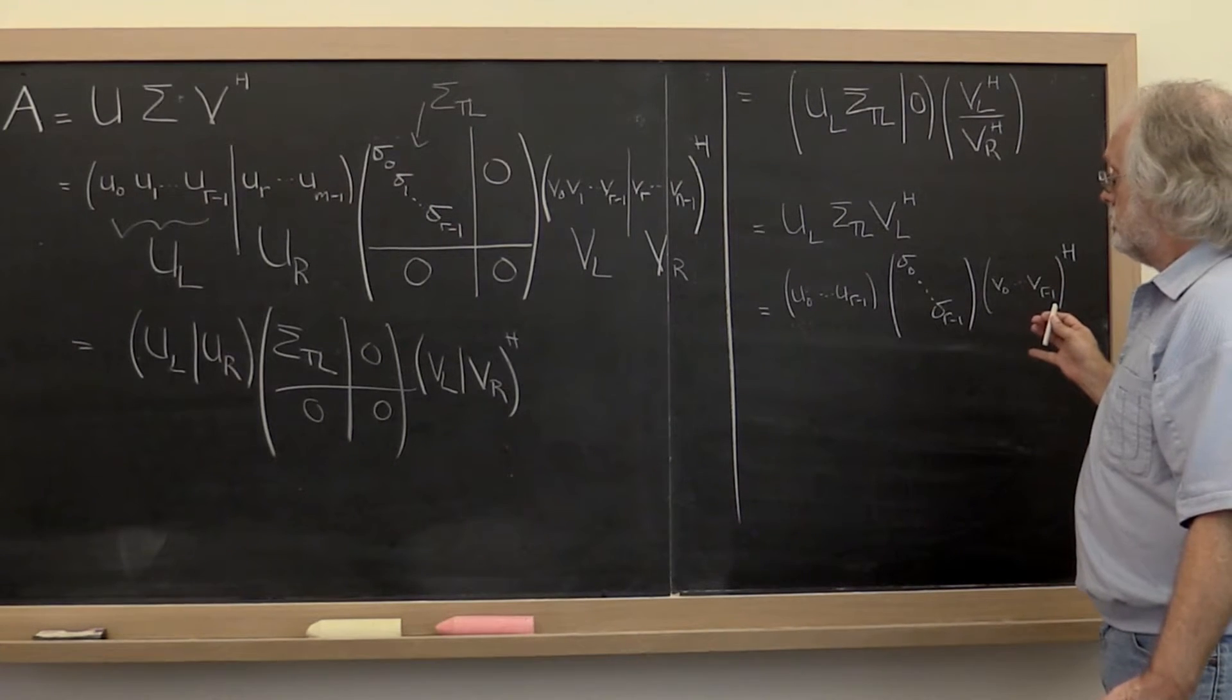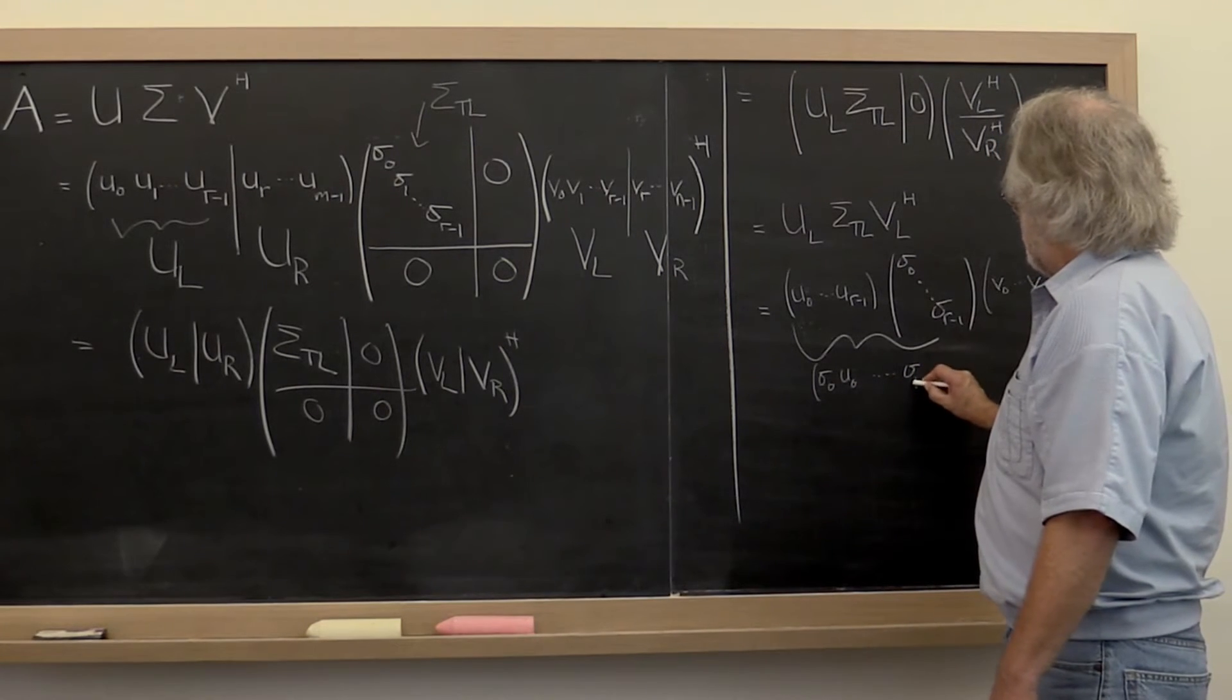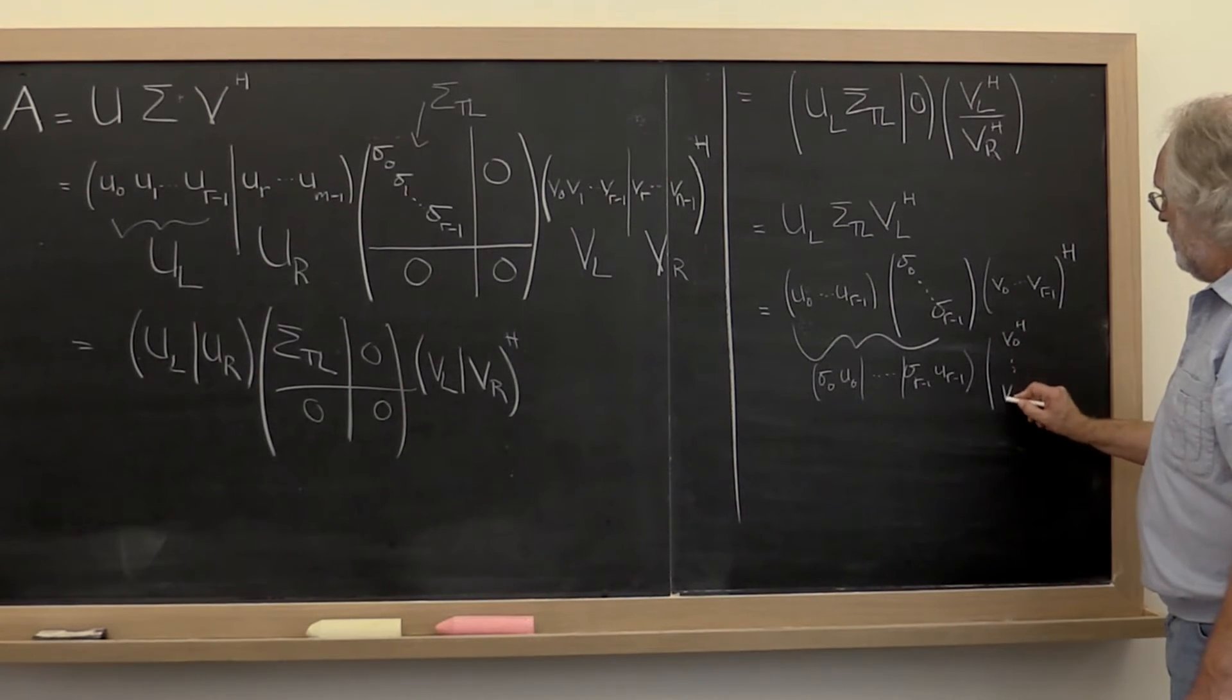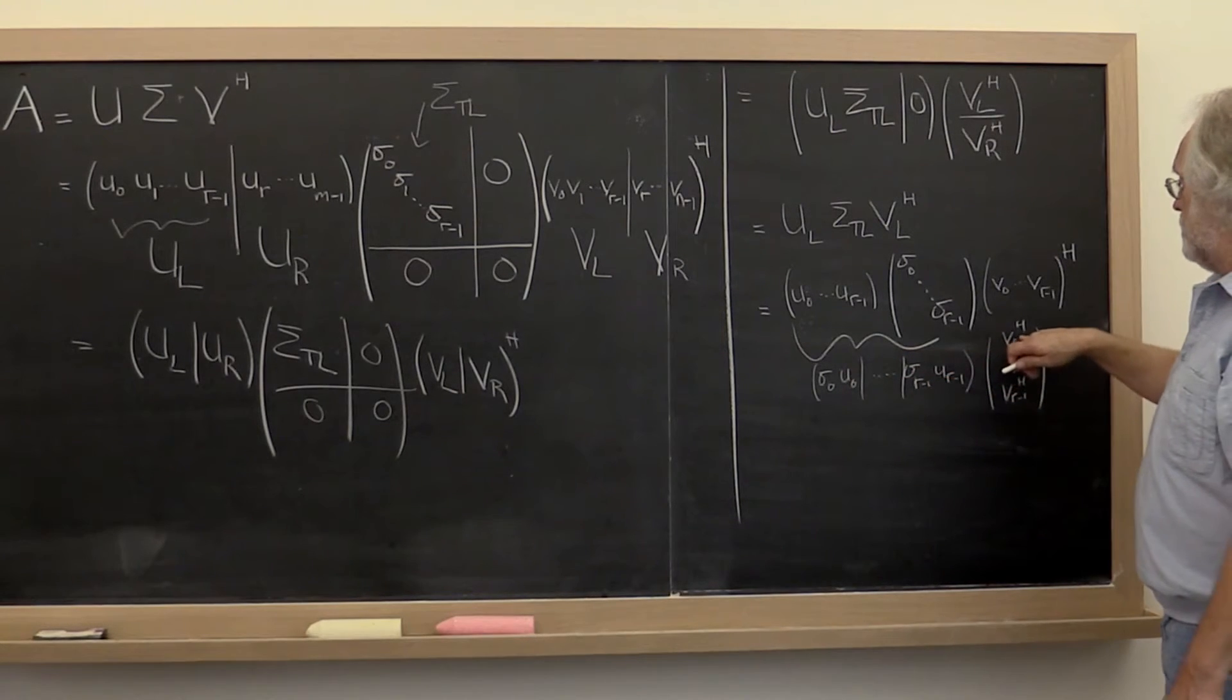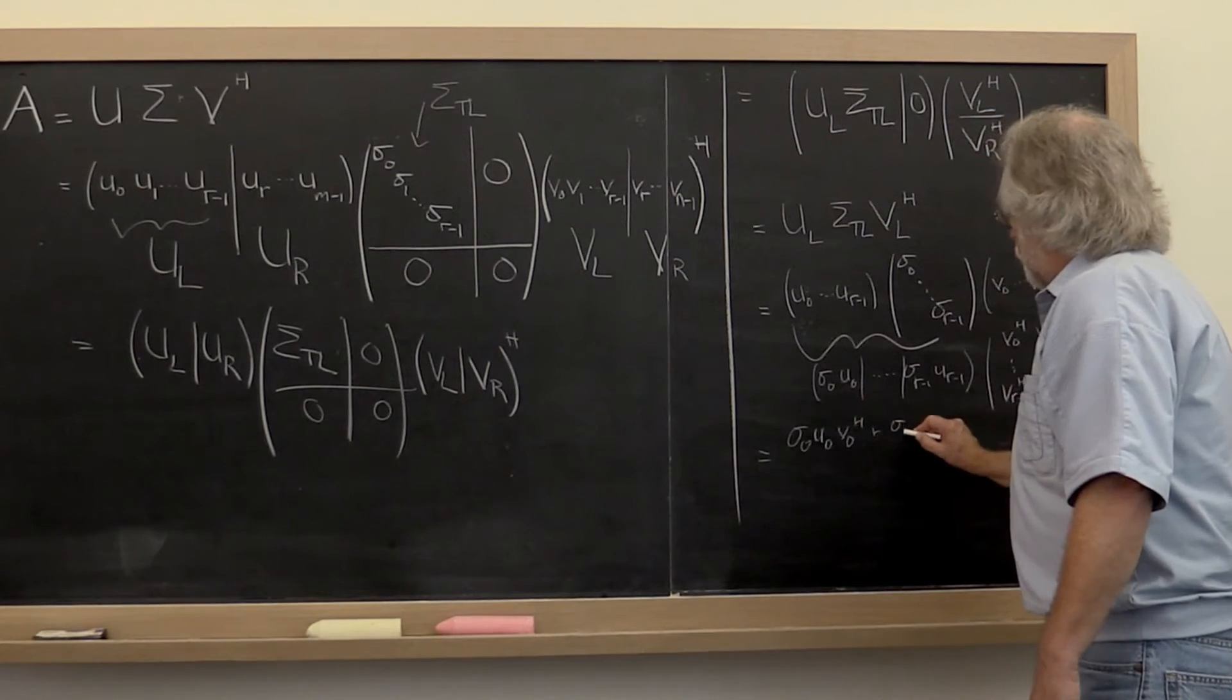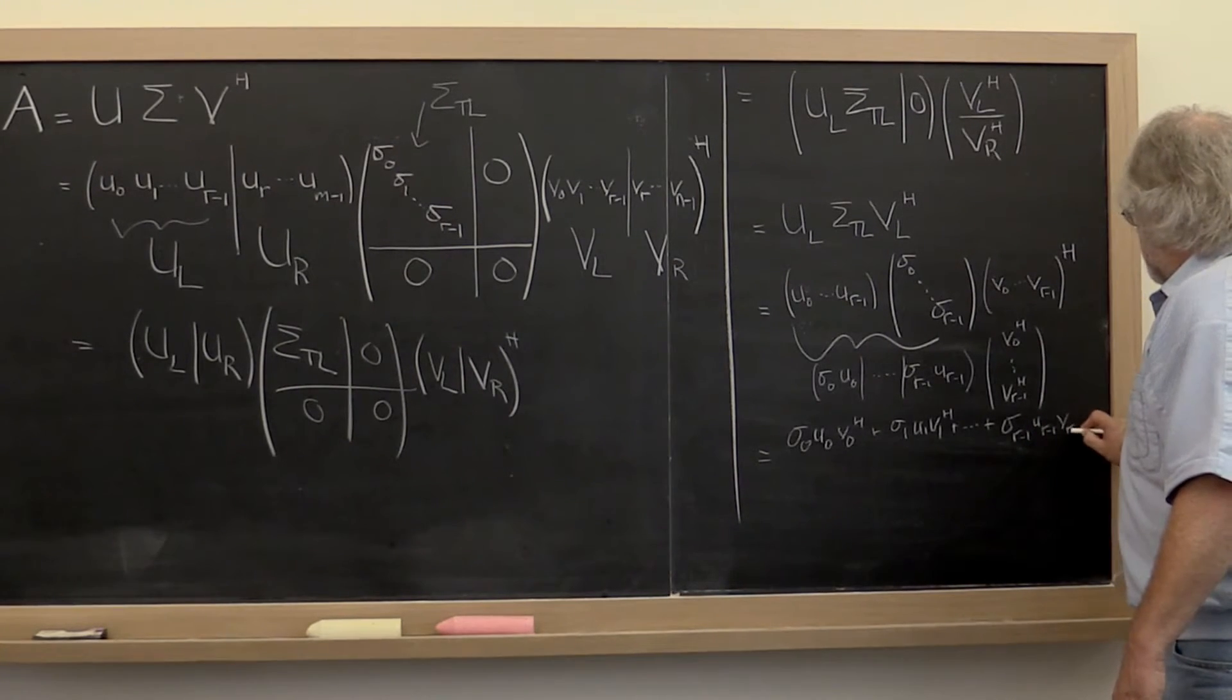We can go one step further and notice that this is just the matrix sigma_0 times u_0 through sigma_{r-1} times u_{r-1}. Let's put some bars in here so we know that these are columns of the matrix times the matrix v_0 Hermitian through v_{r-1} Hermitian transpose. If you multiply that out, you get the first column times the first row plus the second column times the second row and so forth. So you get sigma_0 u_0 v_0 Hermitian transpose plus sigma_1 u_1 v_1 Hermitian transpose and so forth through sigma_{r-1} u_{r-1} v_{r-1} Hermitian transpose.